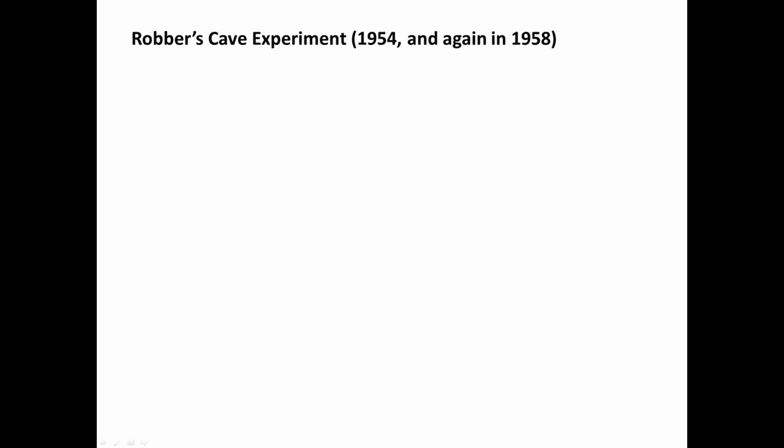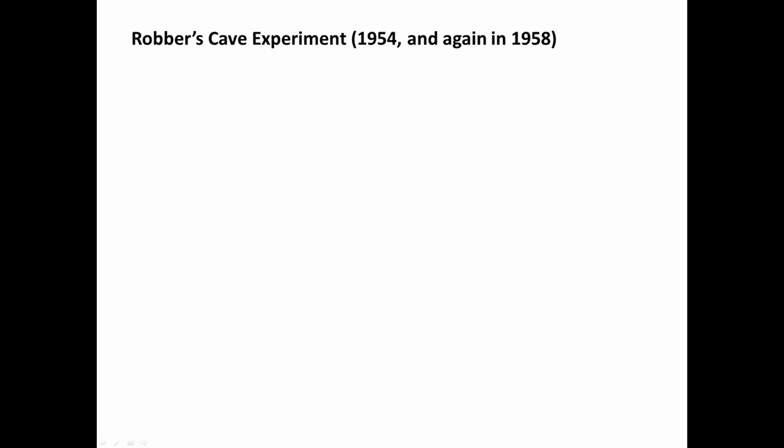To start this discussion, we have to go back to the mid-20th century, and in this case to 1954, when Musafar Sharif and his wife Carolyn arranged for two sets of 11 boys in each group to have a summer camp experience with cabins in the park. This took place at Robber's Cave State Park. The two groups did not know that the other group existed. Sharif wanted to set up a situation in which the two groups would be introduced to each other after they had formed group identities, and at that point they would start engaging in competitive games to get a highly desirable prize — a large pocket knife that each member of the winning team would win.